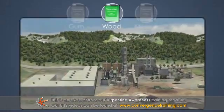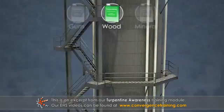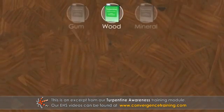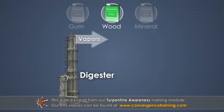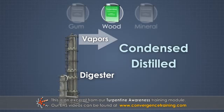In the kraft pulping process, wood chips are cooked with chemicals at high temperatures and high pressures in large pressure vessels called digesters. The vapors that are removed from the digesters during cooking are condensed and then distilled to obtain wood turpentine.